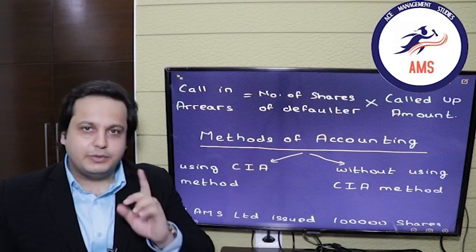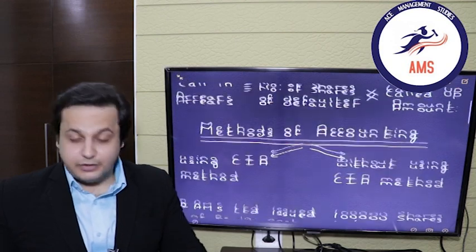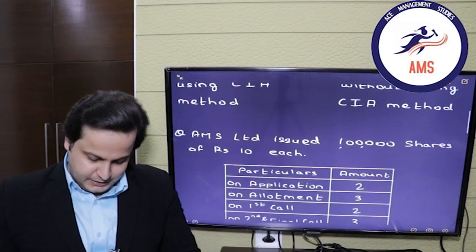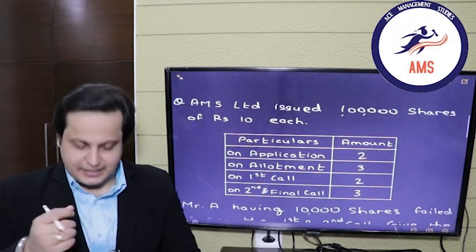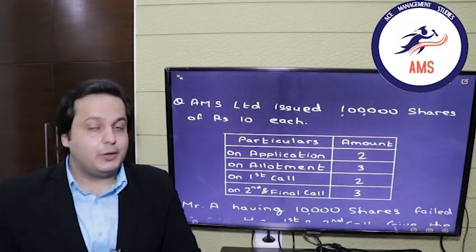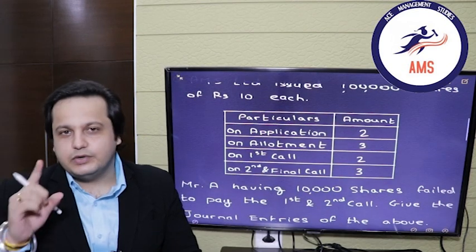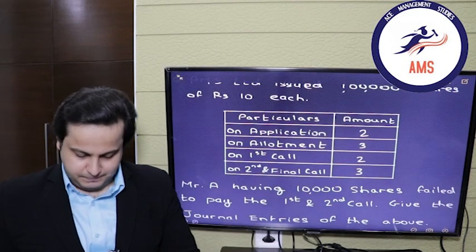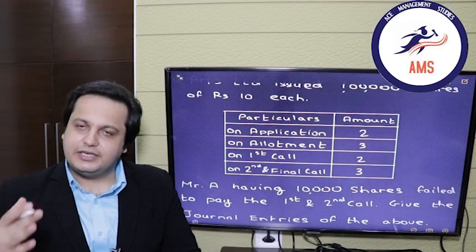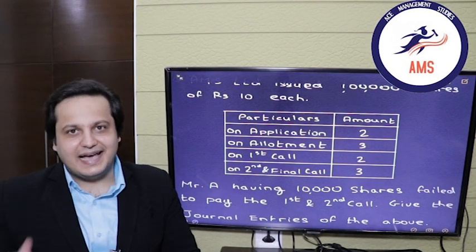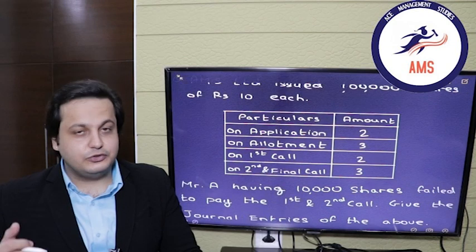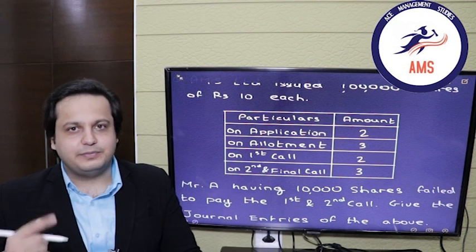Let's move forward with an example, which is the best way to understand the concept. AMS Limited had 1 lakh shares, which they sold for 10 rupees each. We have been given the installments: application, allotment, first call, and the second and final call — for 2 rupees, 3 rupees, 2 rupees, and 3 rupees respectively.